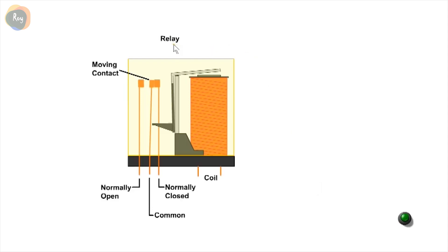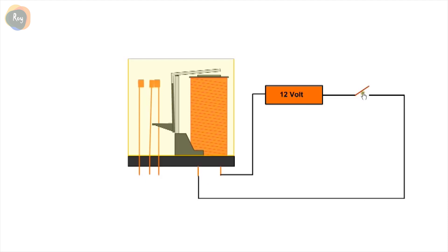A relay also depends on magnetism to operate. It has three contacts. The center is common, the one on the right normally closed and the one on the left is normally open. When a voltage is applied to the coil, it attracts the armature and the center contact changes over. For example, a relay allows a low-power circuit to operate a high-power circuit, such as the rear window defogger in a car.